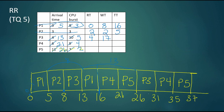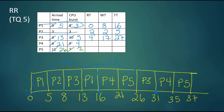Another way to get P3's wait time: P3 finished at time 31, arrived at time four, so its turnaround time is 27. Out of those 27 time units active in the system, 10 were on the CPU, so 17 were waiting — which confirms the earlier calculation.